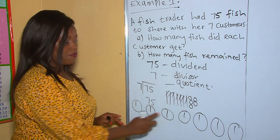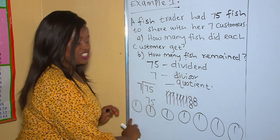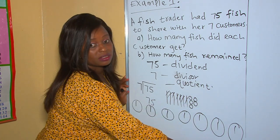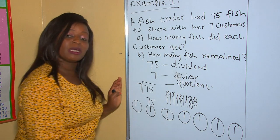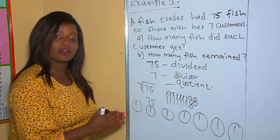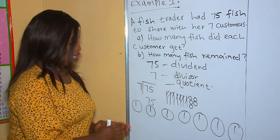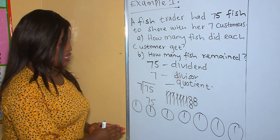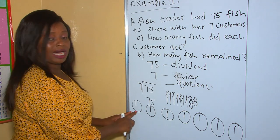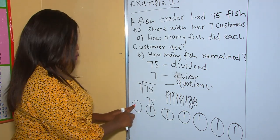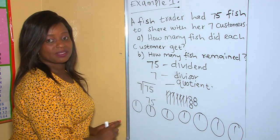Now we are remaining with the five ones to share, and you realize that five can't be shared among seven customers. Remember, they were supposed to take home an equal number of fish. Therefore, each customer gets one ten.